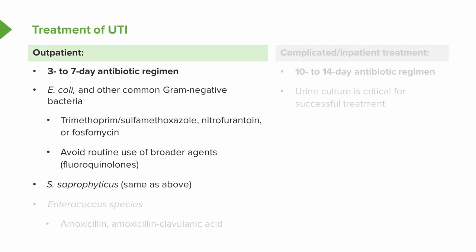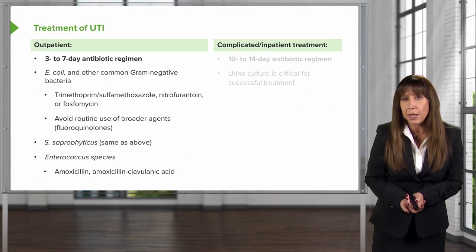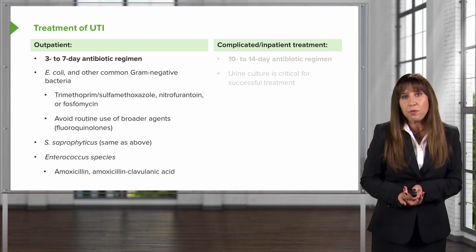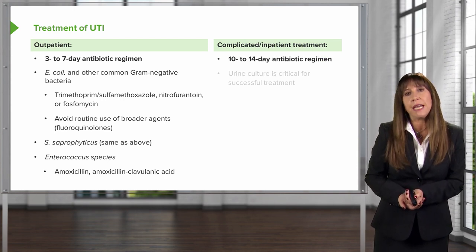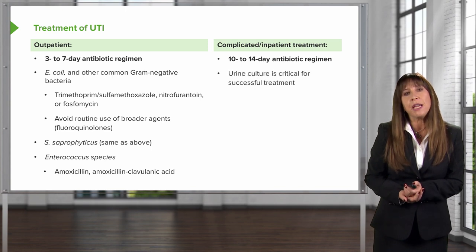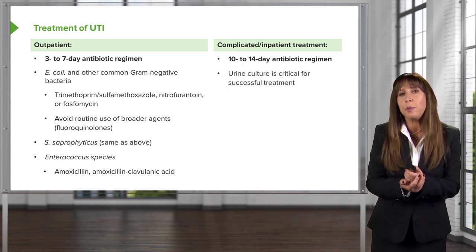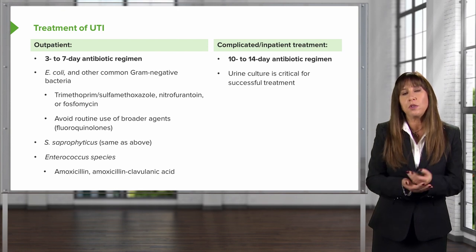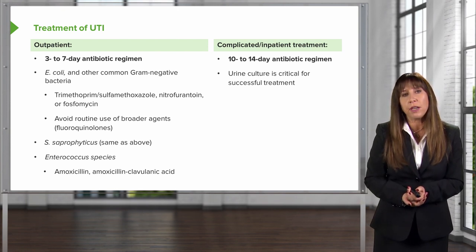Staph saprophyticus gets the same treatment as above — trimethoprim, nitrofurantoin, or fosfomycin. Enterococcal species, however, require different antibiotics with coverage for Enterococcus, including amoxicillin or amoxicillin-clavulanic acid. For complicated UTIs or patients who will be inpatient, we want a 10- to 14-day antibiotic regimen, and a urine culture with antimicrobial sensitivities is going to be critical to successfully treat the underlying urinary tract infection.